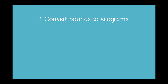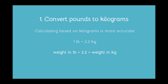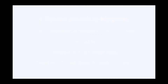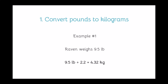Before we begin with the maintenance energy requirement equation, we're going to have to convert your pet's weight from pounds to kilograms. In veterinary medicine, using kilograms is a standard of measurement and it is actually usually more accurate. Also, the equation was designed for using kilograms, so it's going to make the equation a little less complicated. One pound is equal to 2.2 kilograms, so to convert, simply divide the weight in pounds by 2.2. Always round to two decimal places for greatest accuracy. For example, Raven weighs 9.5 pounds: 9.5 divided by 2.2 equals 4.32 kilograms. Bruin weighs 65 pounds: 65 divided by 2.2 equals 29.55 kilograms.